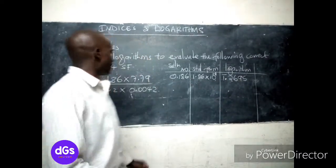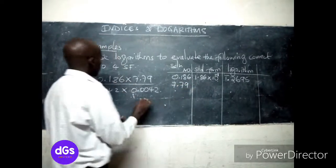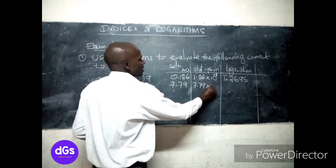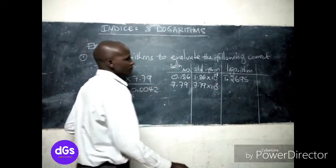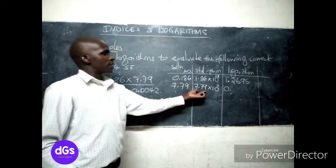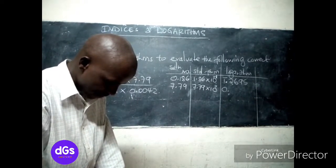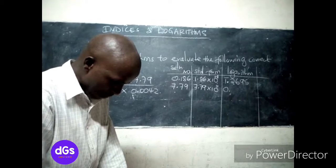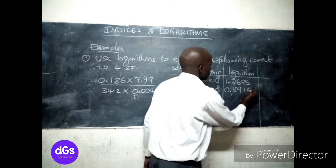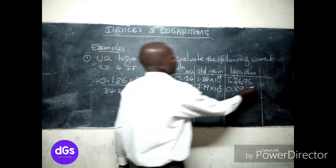The second number is 7.79. The standard form is 7.79 times 10 to the power 0, so the characteristic is 0. We go to the logarithm tables and get 7.79 gives 0.8915. Since this is multiplication, we will add the logarithms.